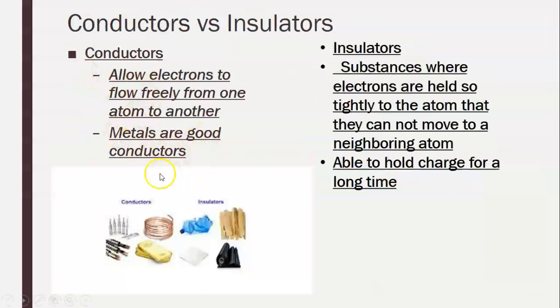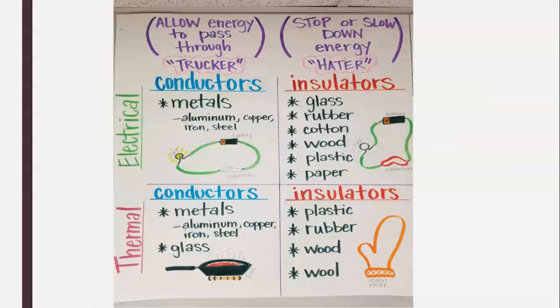Where there are other elements that are not very good at allowing electrons to flow freely. And so sometimes we use them as insulators, which are substances where electrons are held so tight to the atom that they cannot move from one neighboring atom to the next. Meaning that they have great potential energy, but they are not going to let that electron move through a system as freely as some of these metals would. So they're able to hold a charge for a long, long, long time.